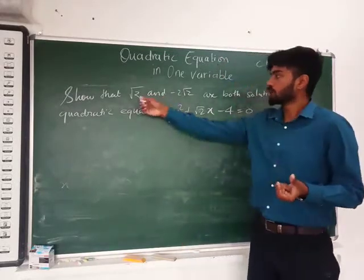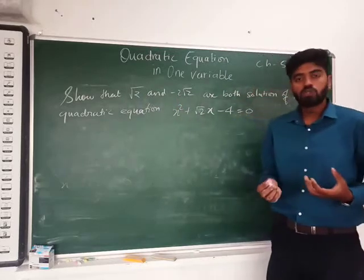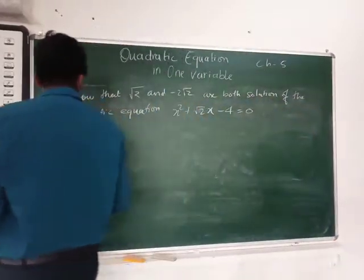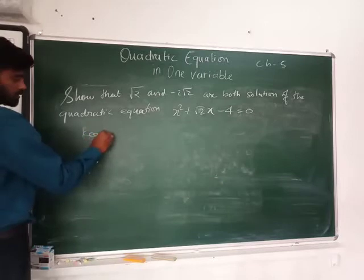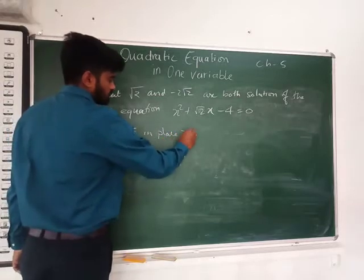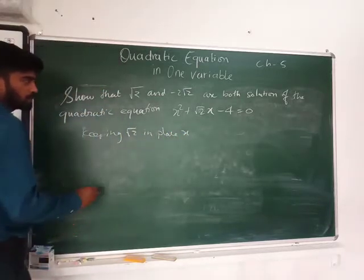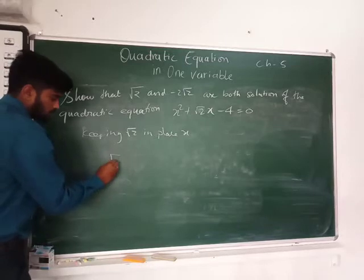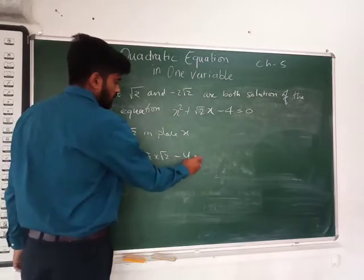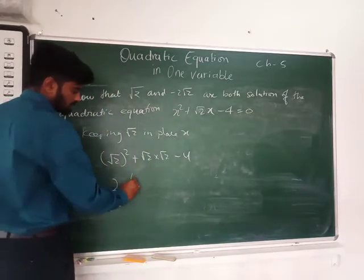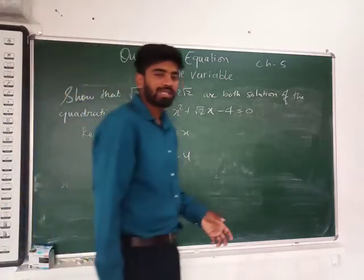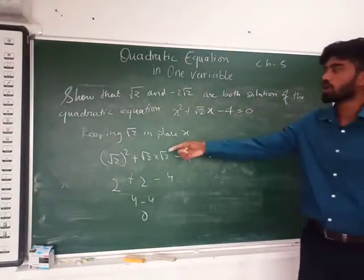To prove x = root 2 is a solution, we keep root 2 in place of x. So root 2 times root 2 minus 4 gives us 2 minus 4, which equals... wait, root 2 squared is 2, and this results in 4 minus 4 = 0. Since I'm getting 0, it means root 2 is indeed a solution of this quadratic equation.